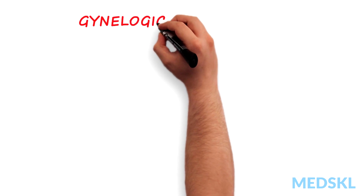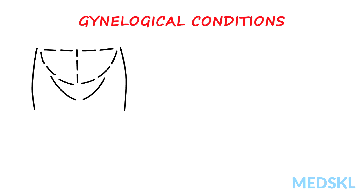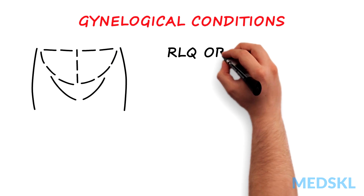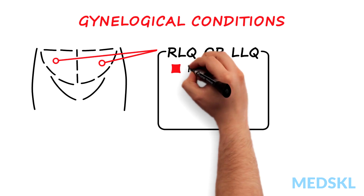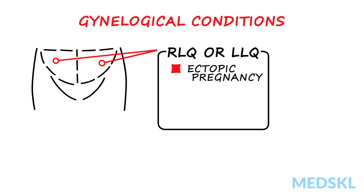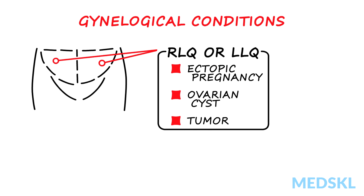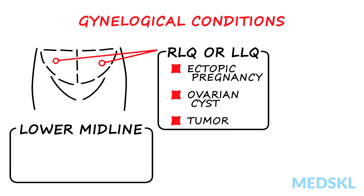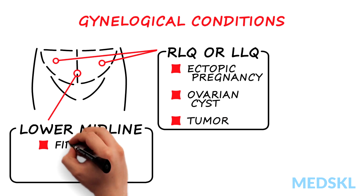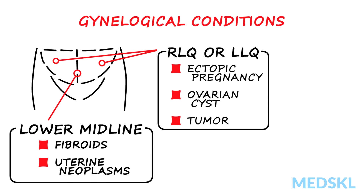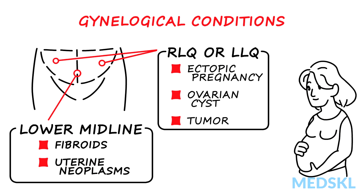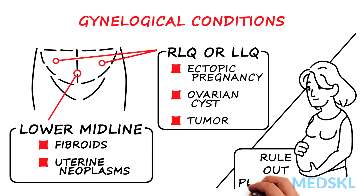Finally, keep in mind that gynecologic conditions can cause abdominal and pelvic masses in women. Right and left lower quadrant masses may be due to ectopic pregnancy, ovarian cysts, or tumors. Lower midline masses can indicate fibroids or neoplasms in the uterus. And don't forget to rule out pregnancy in any woman of childbearing age.